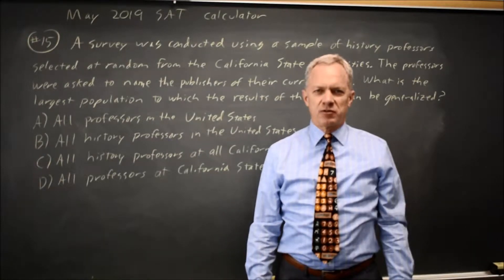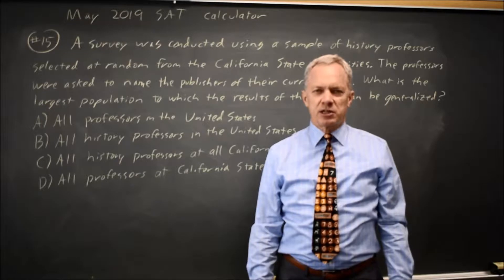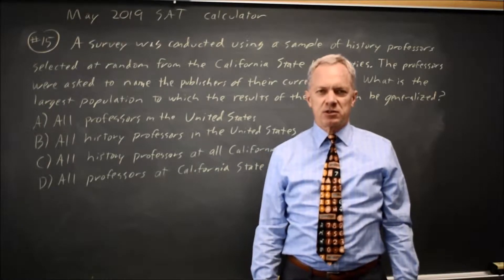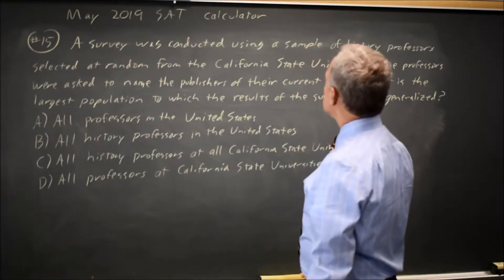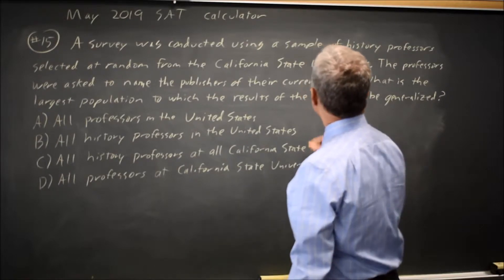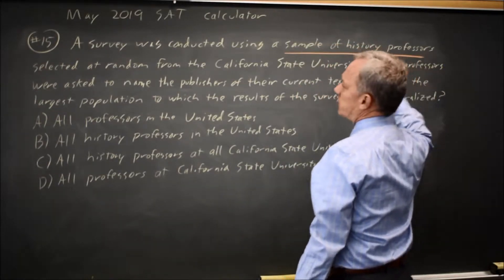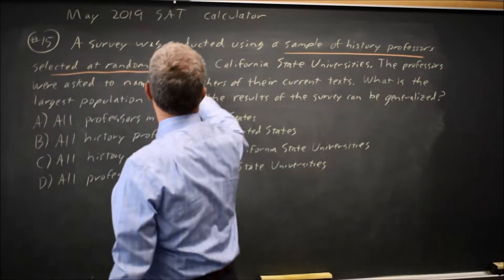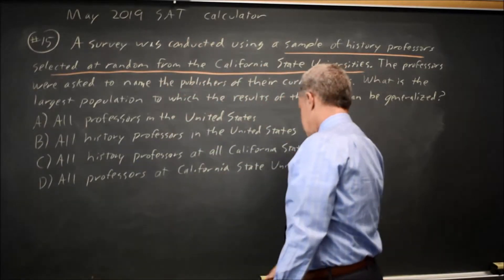This is Calculator Question 15 from the May 2019 SAT. The College Board is asking about generalizing the results of a survey. In this survey, we had a sample of history professors selected at random from California State Universities.